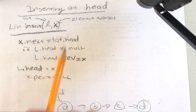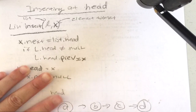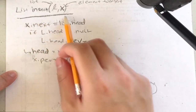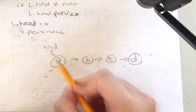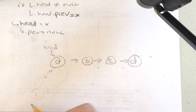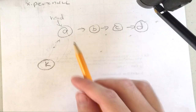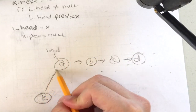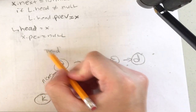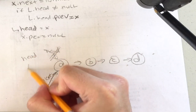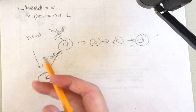Now, what if you want to insert an element before the head? Say I have list A, B, C, D and I want to insert element K before A. I point K's next to the current head A, then reset the head pointer to now point to K. That basically adds K before A in the list.